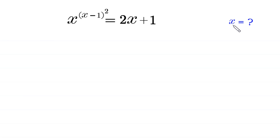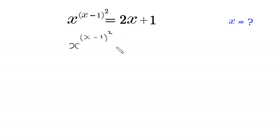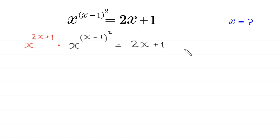Let us start by multiplying both sides of this equation by x to the power 2x plus 1. We have the expression x to the power x minus 1, whole squared, is equal to 2x plus 1. We multiply both sides by x to the power 2x plus 1.